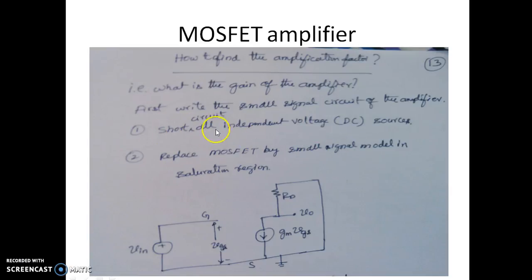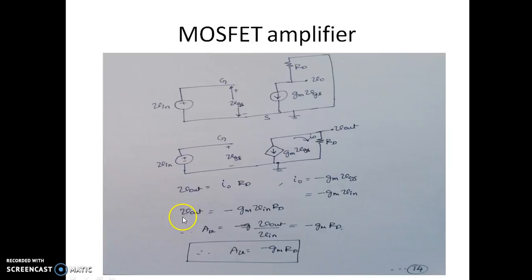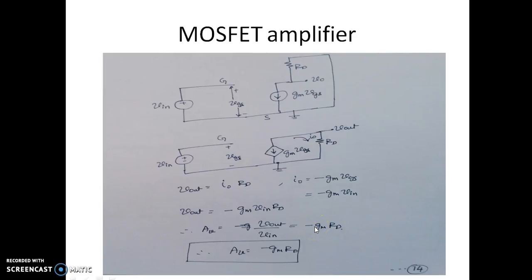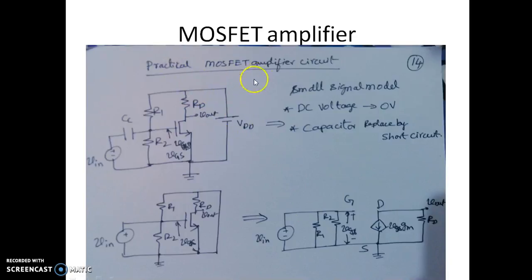After replacing the MOSFET by its small signal model and short-circuiting all independent voltage sources, we obtain the AC equivalent circuit. The output voltage is given by I0 into RD, where I0 is the negative of GM into VGS. From this, the small-signal voltage gain, Vout/Vin, can be written as minus GM into RD.